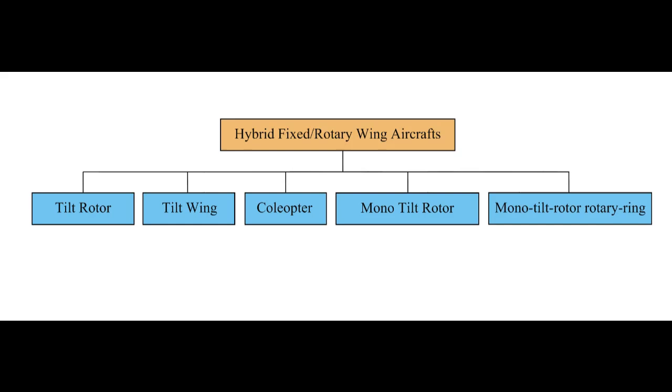This group includes five subgroups, namely: tilt rotor, tilt wing, coleopter, mono tilt rotor, and mono tilt rotor rotary ring.